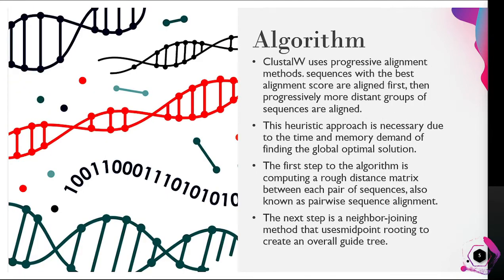ClustalW is a fairly efficient algorithm. This program requires three or more sequences in order to calculate a global alignment. For pairwise sequence alignment, ClustalW uses a progressive alignment method — sequences with the best alignment scores are aligned first, then progressively more distant groups are aligned next. This heuristic approach is necessary due to the time and memory demands of finding the global optimal solution. The first step of the algorithm is computing a rough distance matrix between each pair of sequences, also known as pairwise sequence alignment.